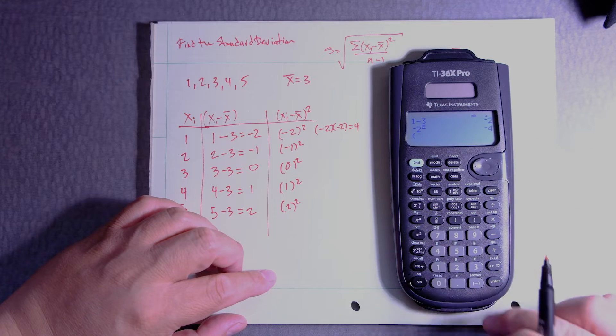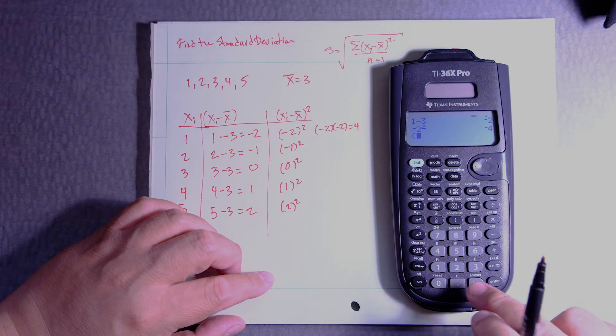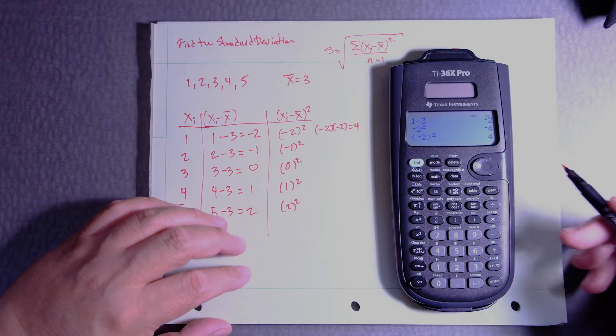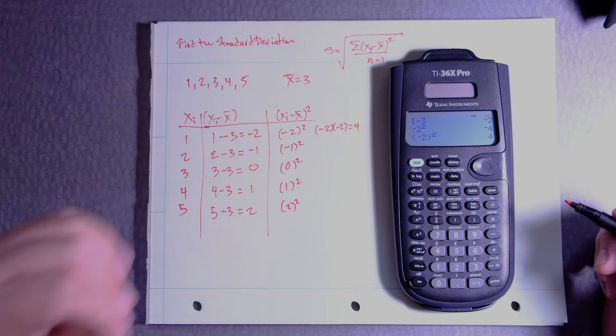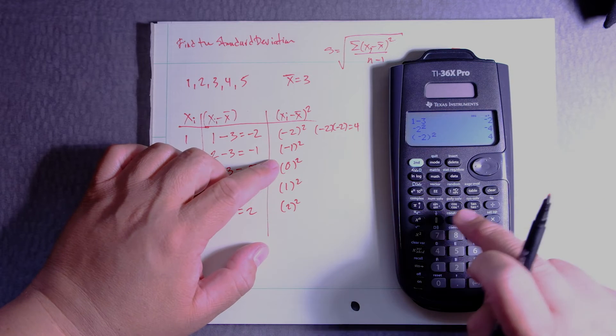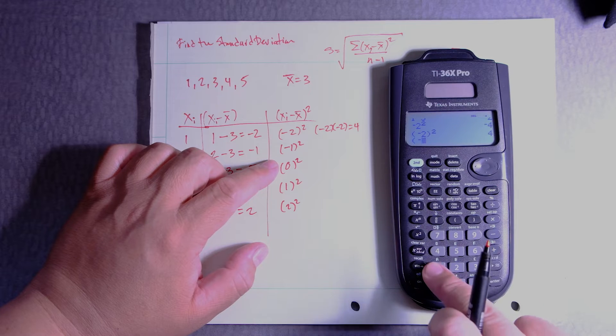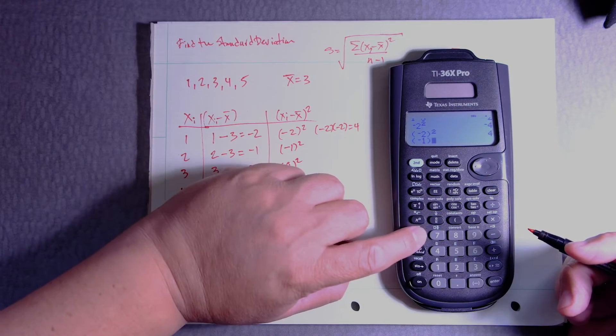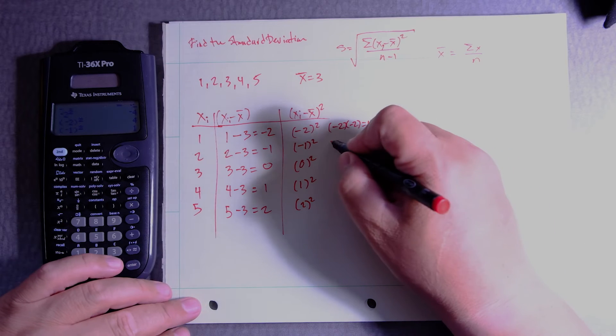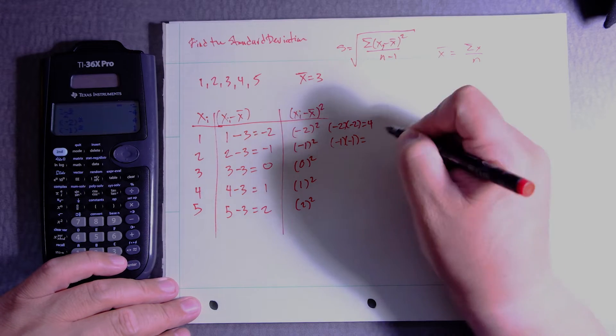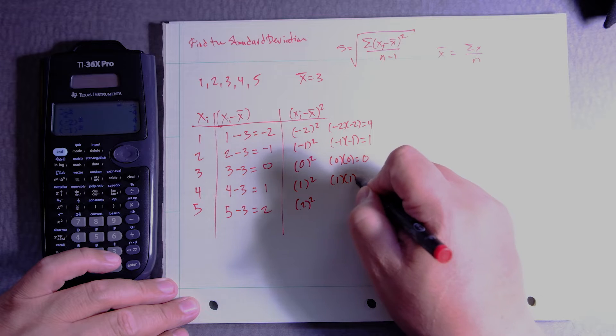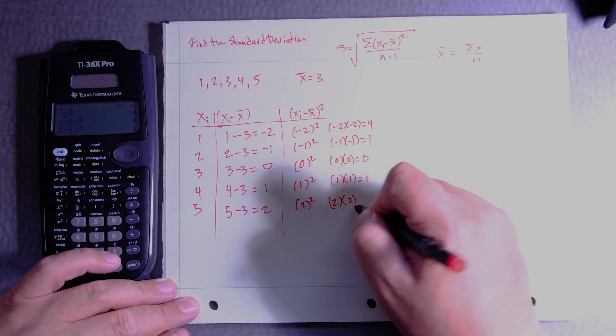You got to put the parentheses, so put the parentheses, minus 2, close parentheses, and then squared, it gives you a positive 4. I know, a lot of steps, putting parentheses and such, or you can do it by hand. Negative 1 squared, so parentheses and negative 1, close it, and then the square button's right here, enter, and that's going to give you 1, so that's negative 1 times negative 1, that's going to be 1, 0 times 0 is 0, 1 times 1, 1, 2 times 2, 4.